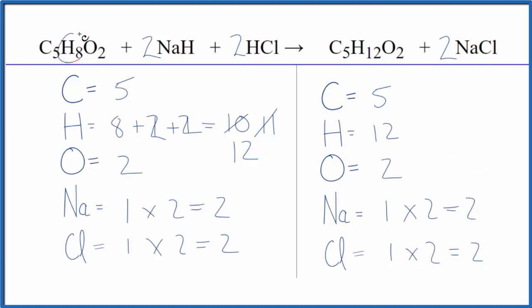So when you have hydrogens like this or another type of atom spread out, it's a little bit more work. But either way, this is the balanced equation for C5H8O2 plus NaH plus HCl.